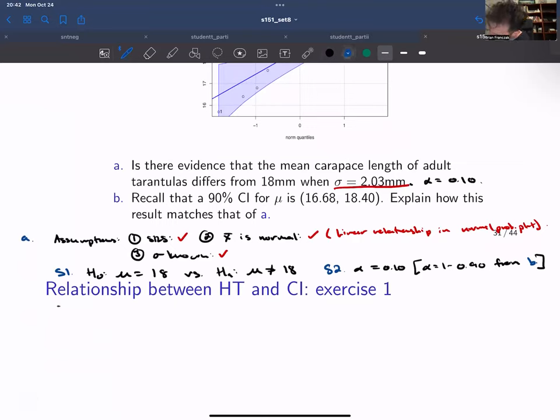So on step three, we're going to have a z score. So we'll have z is x bar minus mu over sigma divided by the square root of n. So this is 17.54 minus 18.00 over 2.03 divided by the square root of 15, which is negative 0.88.